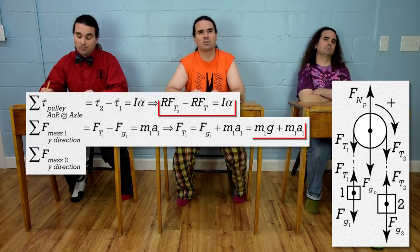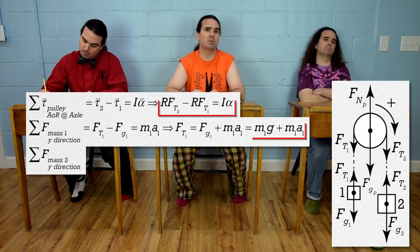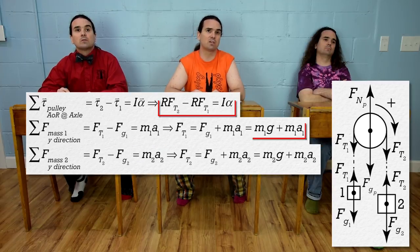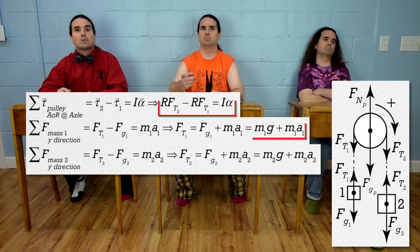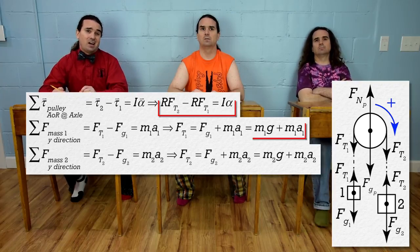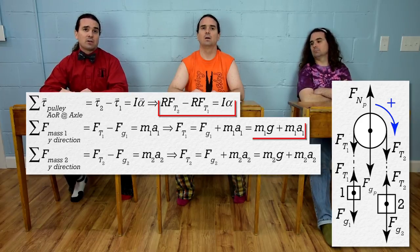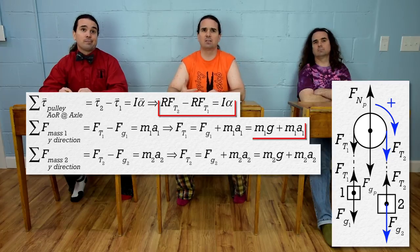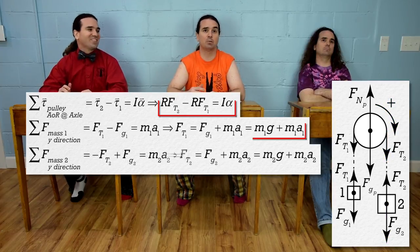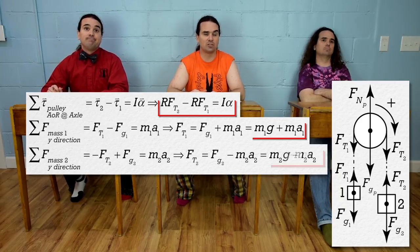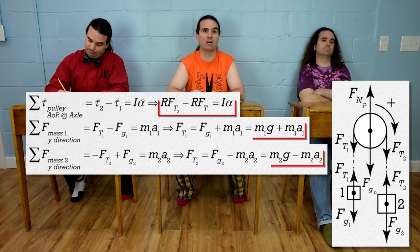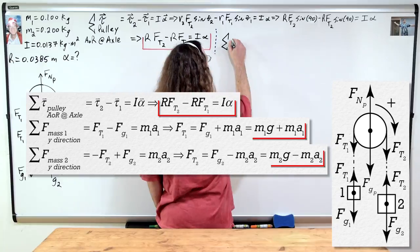Now let's sum the forces on mass 2. Actually it's the same setup but with subscript 2. But because we defined clockwise as positive, down on the side of mass 2 is actually positive. So the net force on mass 2 equals negative tension 2 plus gravity 2, which equals mass 2 times acceleration 2. Therefore, force of tension 2 equals mass 2 times g minus mass 2 times acceleration 2.